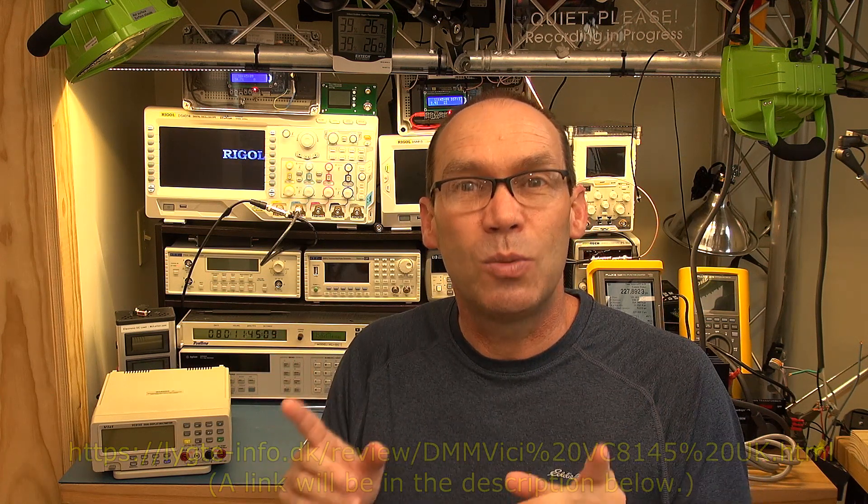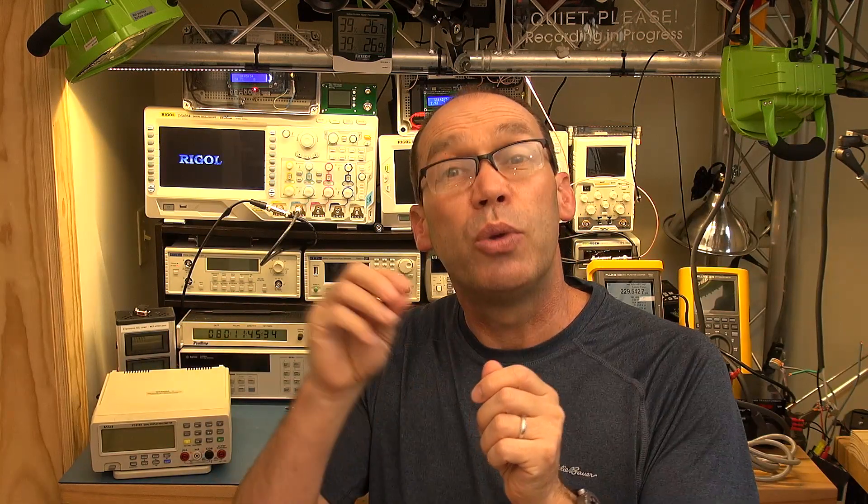This is one of those cases where the main data sheet for the main multimeter IC provides a ream of information in terms of how to use that IC to implement a multimeter. Basically it describes all the functionality around it which I don't think you'd normally see. And then obviously someone like Vicky go and buy this off the shelf and then they implement their own code to extract the functionality they want from this IC.